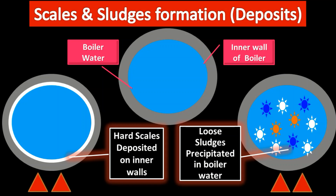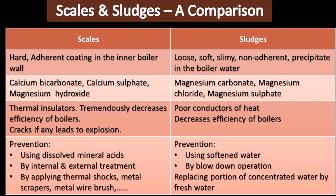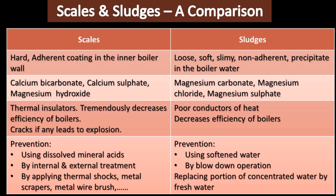Comparing scales and sludges: scales are hard, adherent coatings on the inner boiler wall, whereas sludges are loose, soft, slimy, non-adherent coatings in the boiler water. Calcium salts usually cause scales and magnesium salts cause sludges. Scales are thermal insulators — they tremendously decrease the efficiency of boilers. Even if we supply continuous heat, the scales will not allow heat to pass through to the water, so it takes a lot of time to make the water boil. Sludges are also poor conductors of heat and decrease efficiency, but not as severely as scales.